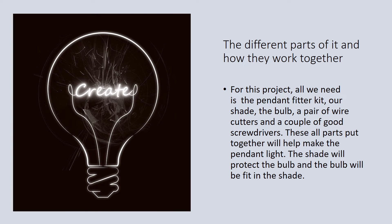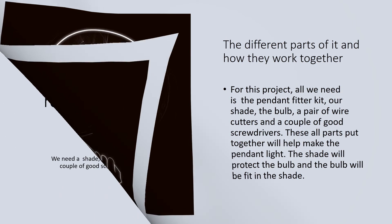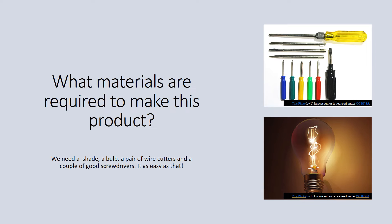The different parts of a pendant light and how they work together. For this project, all we need is the pendant fitter kit, a shade, the bulb, a pair of wire cutters, and a couple of good screwdrivers. These parts put together will help make the pendant light. The shade will protect the bulb and the bulb will be fitted in the shade. You can get really creative with the pendant light because all you need is the shade, wire cutters, and screwdrivers — you can manufacture it easily and DIY it at home.